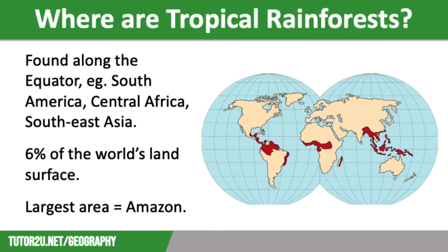The largest area of rainforests is the Amazon Basin, which covers Brazil, Bolivia, Peru, Ecuador, Colombia, Venezuela, Guyana, Suriname and French Guyana.